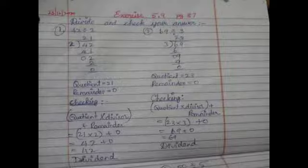Second sum: 69 divided by 3. Take the 6 first — two 3s are 6, 6 minus 6 is 0. Bring down the next number 9 — three 3s are 9, so the quotient is 23 and the remainder is 0. Checking: 23 multiplied by 3 is 69, plus 0 is 69, which equals our dividend. Answer is correct.